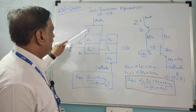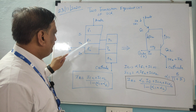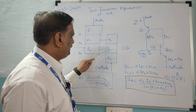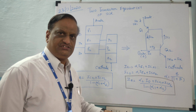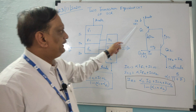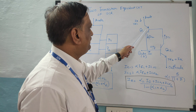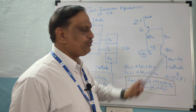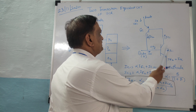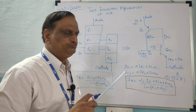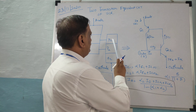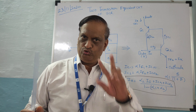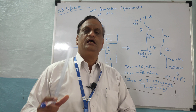The PNP transistor consists of layers P1, N1, P2, and the NPN transistor consists of layers N1, P2, N2. You can represent this model symbolically using two transistors. The first transistor Q1 is the PNP transistor, and the second transistor Q2 is the NPN transistor. This is a back-to-back connection of the two transistors — PNP and NPN — connected back to back.